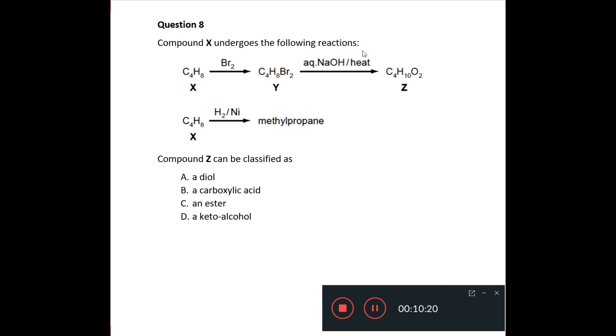Number eight, it says, compound X undergoes the following reactions, similar synthetic pathway, like question seven and six above. X goes to Y goes to Z, and the question says, compound Z can be classified as. If we look at what's happening here, compound Y, what's the difference between compound Y and compound Z? Compound Y has C4H8 with two bromine atoms that disappear, and we get C4H10O2, so we've added two oxygen atoms, and we've added two hydrogen atoms there. And what was the reagent? The reagent was OH, so perhaps we've added two OH groups there. And so, what we have is a di-alcohol, C4H8(OH)2, and so our answer is A.